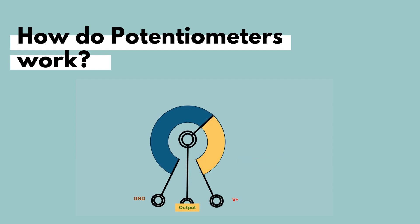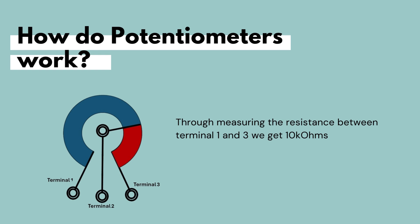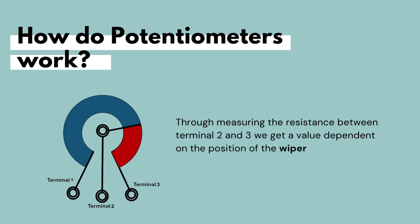Let us see how the potentiometer works. If you measure the resistance between the outer terminals — terminal 1 and terminal 3 — you will measure the maximum value of the potentiometer. If our potentiometer is a 10 kΩ potentiometer, then placing the multimeter leads across terminals 1 and 3 will read 10 kΩ. But if we measure the resistance between one of the outer terminals and the wiper, we get a value dependent on the position of that wiper — ranging from 0 kΩ to 10 kΩ — and by varying that resistance, we vary the output voltage on terminal 2.